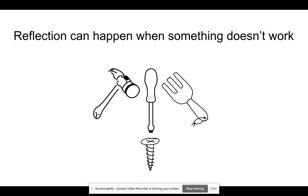Sometimes things don't work very well, and here I'm illustrating this idea: you've got a crosshead screw, you're trying to get it into a piece of wood, and the only tools you have are a hammer, a flathead screwdriver, and a garden fork. Between them you could probably get the screw into the wood, but it wouldn't be ideal.